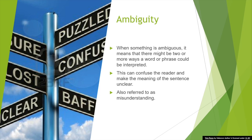Ambiguity is when there might be two or more ways a word or phrase could be interpreted. This can confuse the reader and make the meaning of the sentence unclear. The captions and dialogues that follow the images are ambiguous — it expresses different understandings that people might have of the so-called actual meaning. In other words, one character has a different interpretation of the words in the speech bubble than the other. That's why ambiguity is sometimes also referred to as misunderstanding.